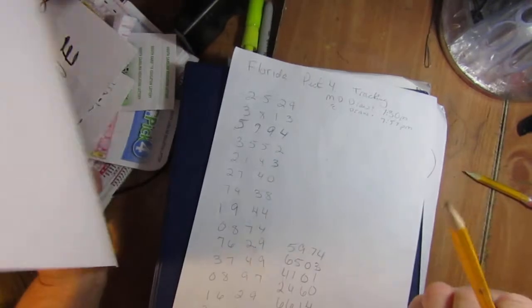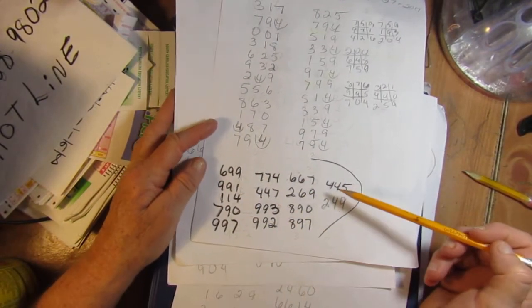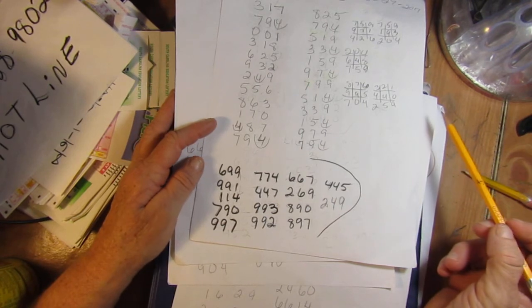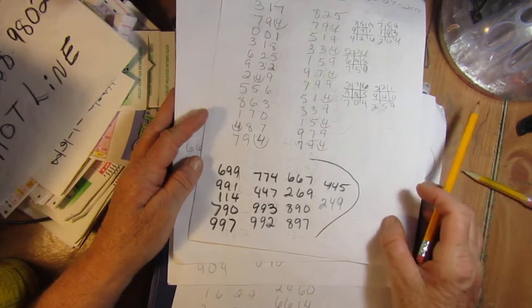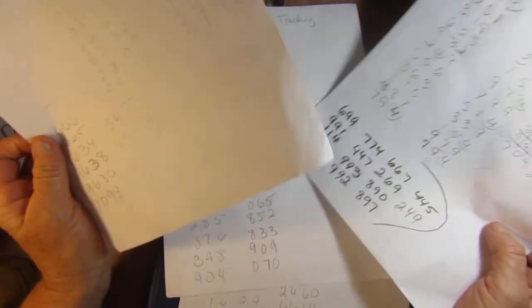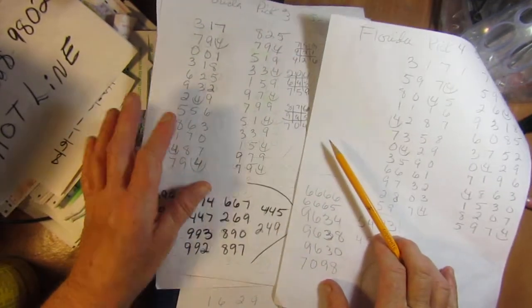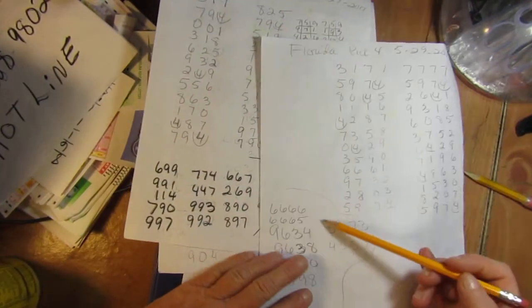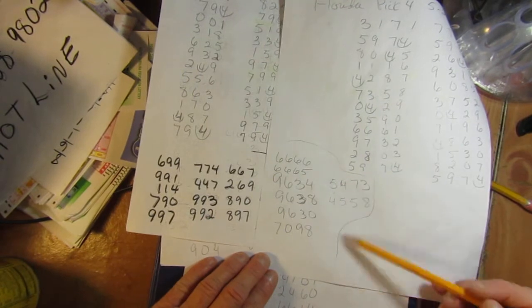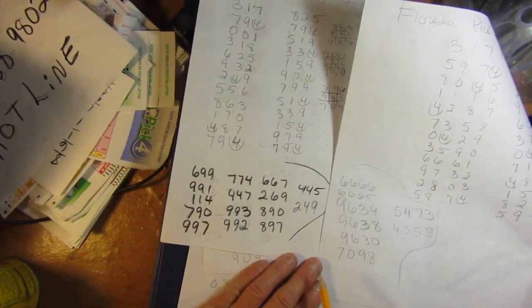Alright. Again, that's all the pick 3 numbers. That's for Florida. Take a good look. Alright. Let me show y'all your pick 4 numbers again. Okay. That's all the pick 4. Pick 4. Pick 3.